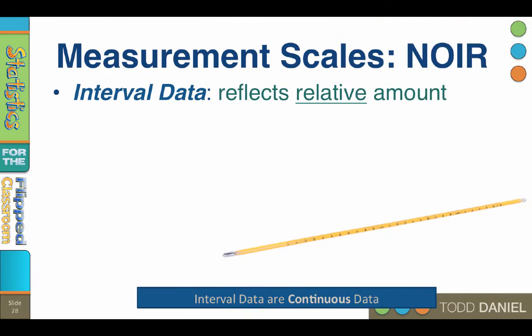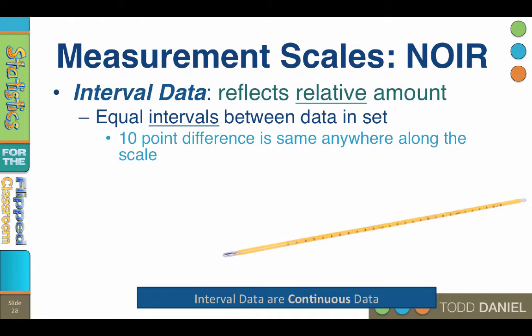First, let's see how numbers are used to represent amounts, or what we call continuous or scale data. With interval data, the scores reflect the relative amount of the variable. They represent an amount on a scale, although the scale itself may not be comparable to other scales. All of the intervals on the scale are the same, however.